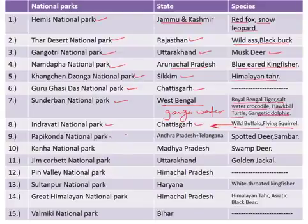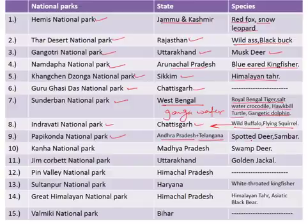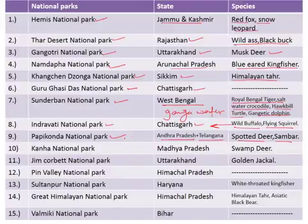Next is the Papikonda National Park, situated on the border of Andhra Pradesh and Telangana, famous for the spotted deer and sambar. Papikonda National Park is also famous for sandalwood. Next is the Kanha National Park, situated in the state of Madhya Pradesh, famous for the swamp deer.